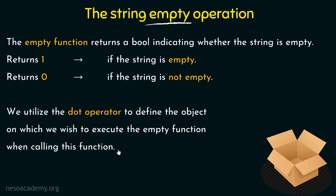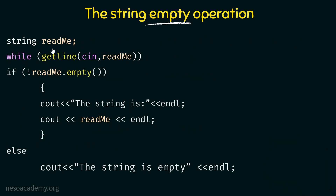Let us take an example to understand how this is used. Here is a sample code snippet where I have defined a string called readme. Using the getLine function inside a while loop, we are reading the input from the user using cin and storing the input to the readme string. Here we have an if condition that says not of readme.empty. This is how we make use of the empty function — readme is the name of the string, followed by the dot operator, then empty with parenthesis. It returns 1 if the string is empty, and 0 if not.